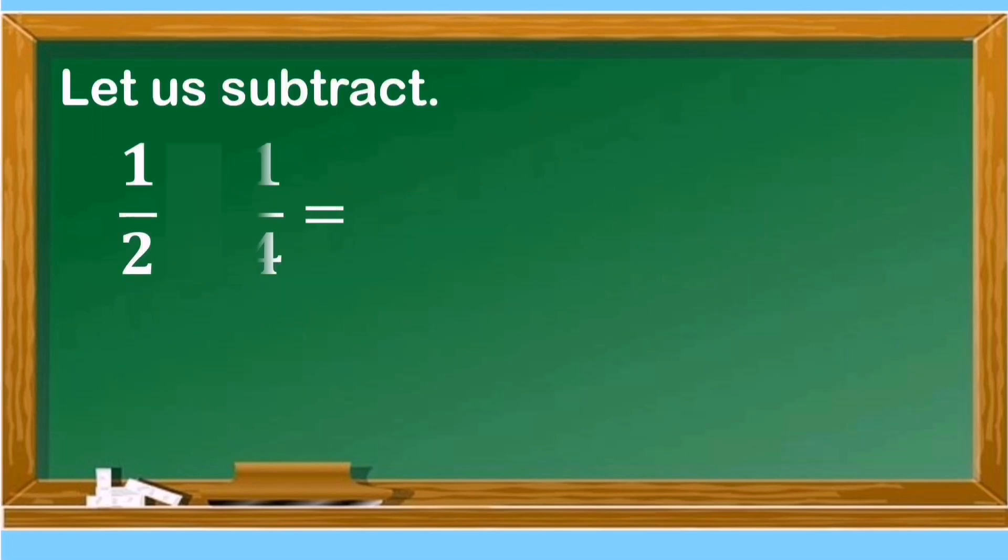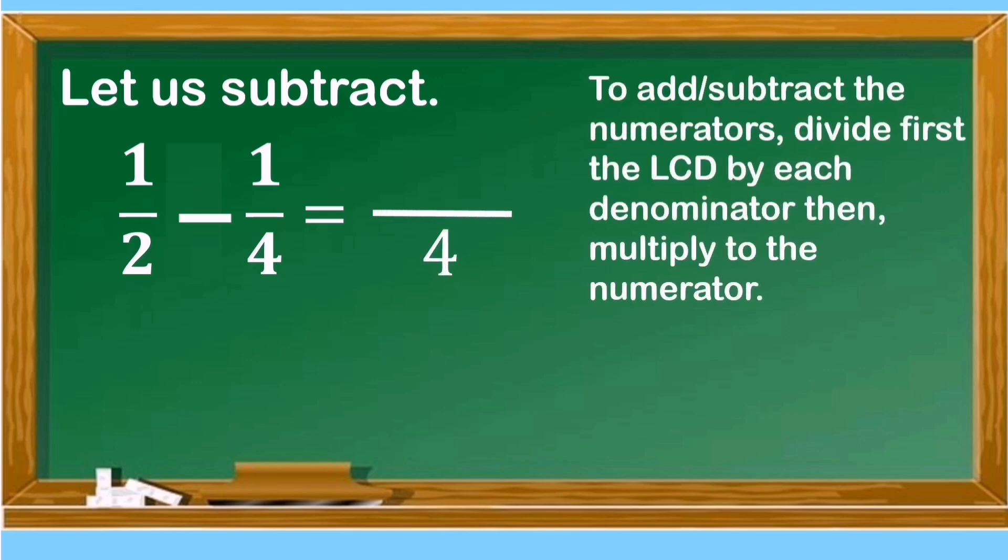Let us proceed to the solution. Let us write first the least common denominator of 1/2 and 1/4. With the same process, we will divide first the LCD by each denominator, then multiply to the numerator. 4 divided by 2 is equal to 2 times 1 is 2. 4 divided by 4 is 1 times 1 is equal to 1. Now we can subtract 2 and 1. 2 minus 1 is 1. The difference between 1/2 and 1/4 is 1/4.